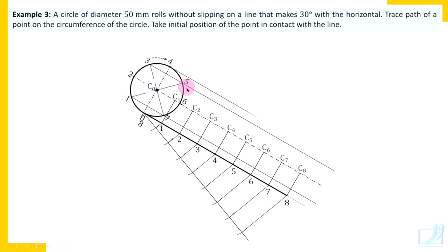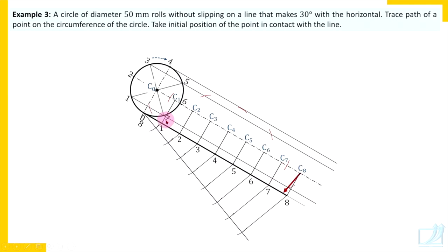Now take the radius in compass and start cutting the lines. From C1, cut the first line — note that point 1 is above the center, so take care of that. From C2, cut the second line. From C3, the third line. From C4, the fourth. From C5, the fifth. From C6, the sixth. From C7, the seventh. From C8, cut the eighth line. This is how you get eight different positions of point P. The initial position is in contact with the ground, then join all these points. The final position is again in contact with the fixed line. This is how we complete the curve.